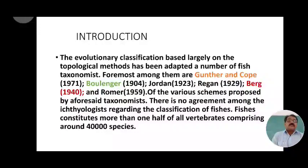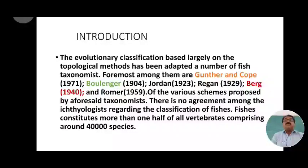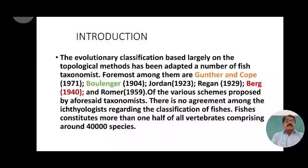Fishes constitute more than one half of all vertebrates, comprising approximately 30,000 to 40,000 fish species found on earth. All these species are not the same — they differ in structure, shape, size, and habit. Therefore, a systematic classification is essential to identify and recognize all these species of fishes.